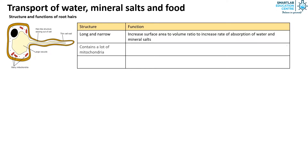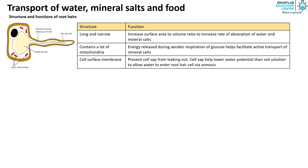Second, the root hair contains a lot of mitochondria. This is to ensure that sufficient energy is released during aerobic respiration of glucose, which helps facilitate active transport of mineral salts. Lastly, the cell surface membrane prevents cell sap from leaking out. The cell sap has a lower water potential than the soil solution to allow water to enter the root hair via osmosis.